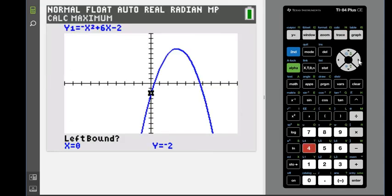And then when you do that, you have a screen that shows up. And the first thing that it's going to ask you for is the left bound. So basically, the left bound is saying, I want something to the left side of my highest point. As long as it's flashing to the left side, you're good. You can hit enter.